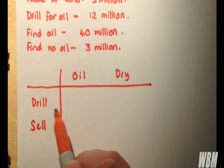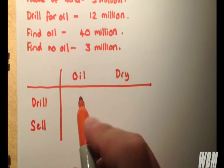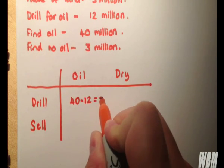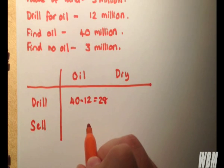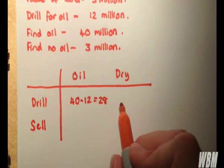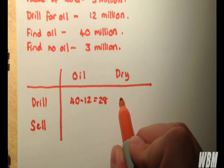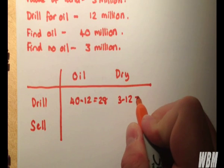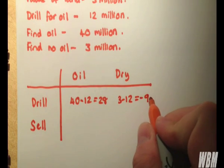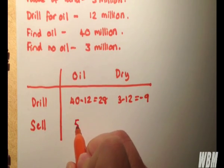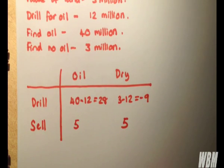So say I take the decision that I drill and there's oil, then I make 40 million minus the 12. So I make 28 million because it costs 12 to drill. Say I drill and it's dry, then it costs 12 million and I can only recoup 3 million from the sale. So I'm minus 9 million. Say that I sell the land. Well, either way, I get 5 million.